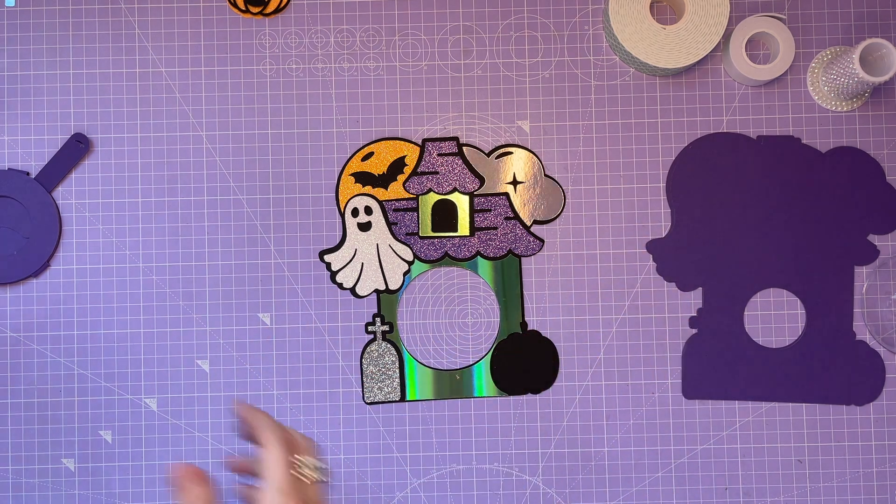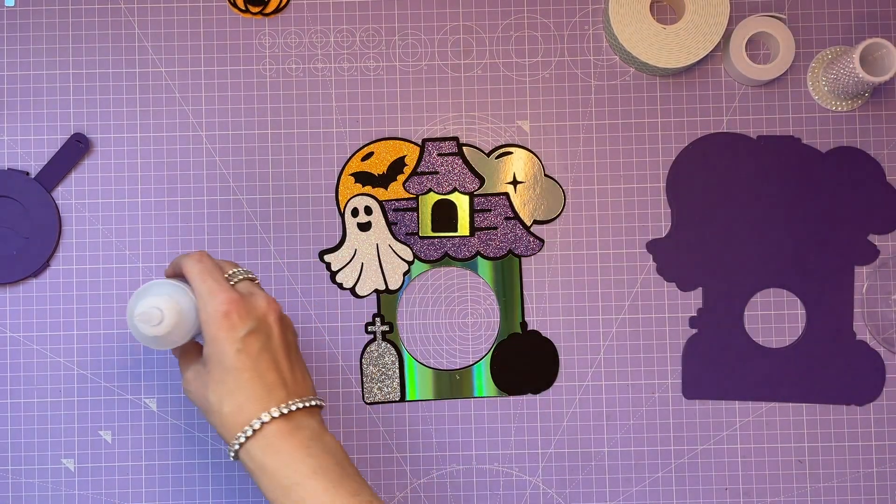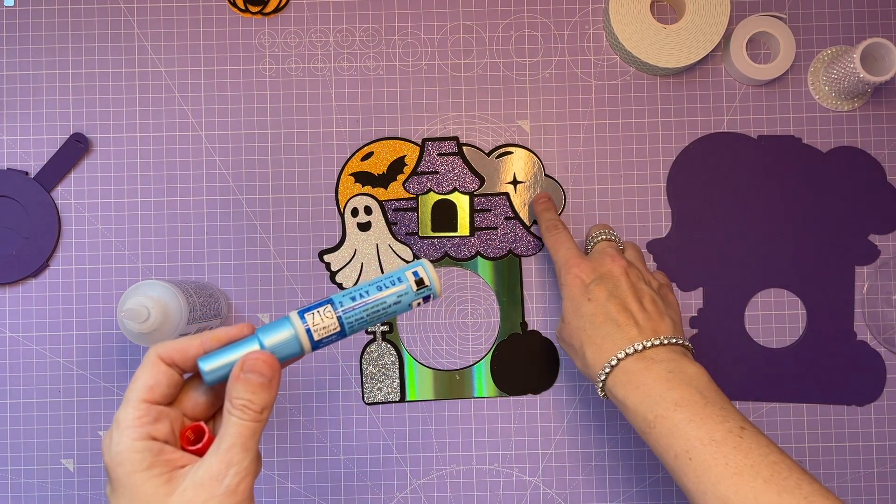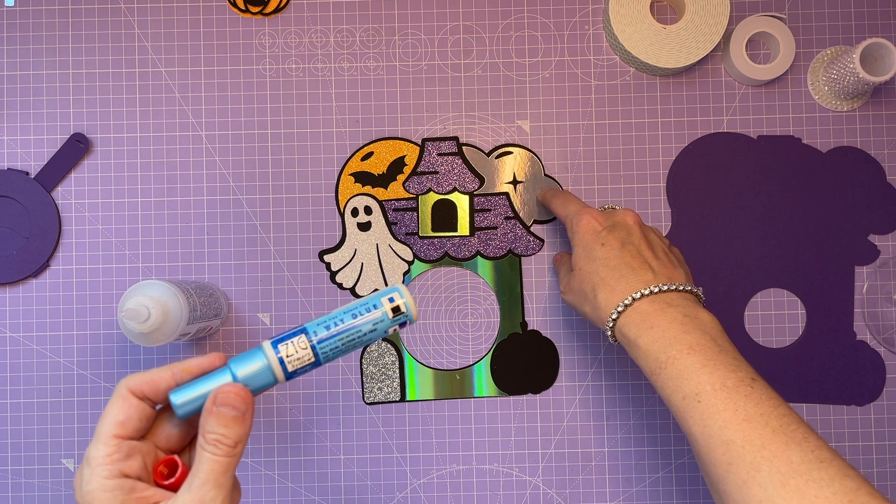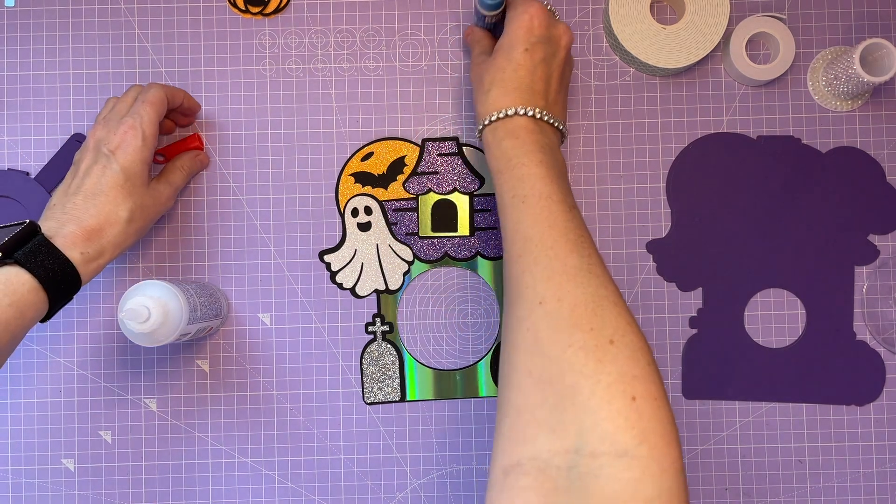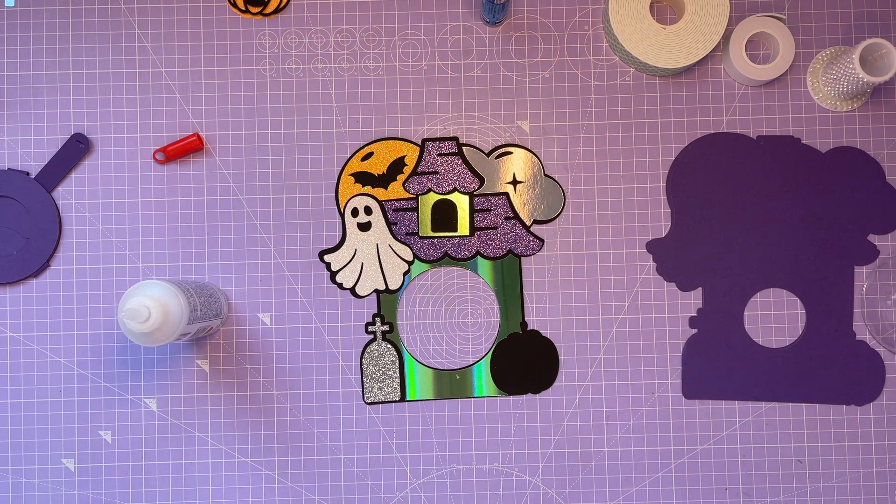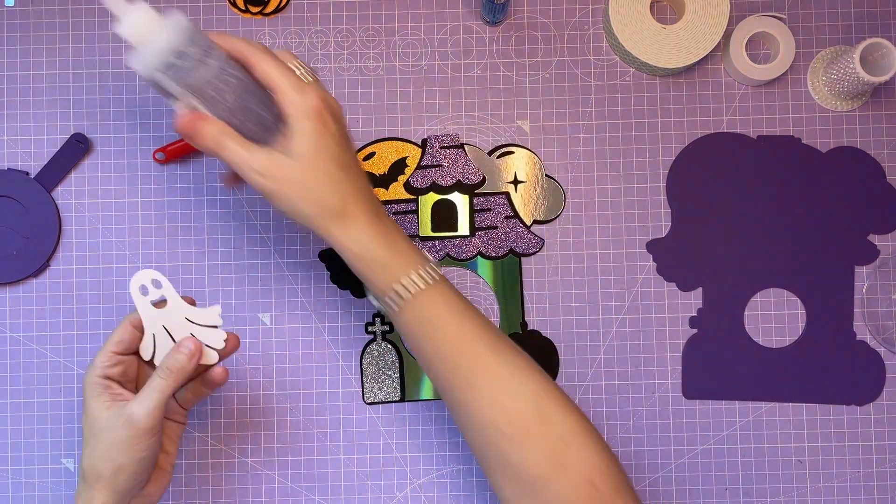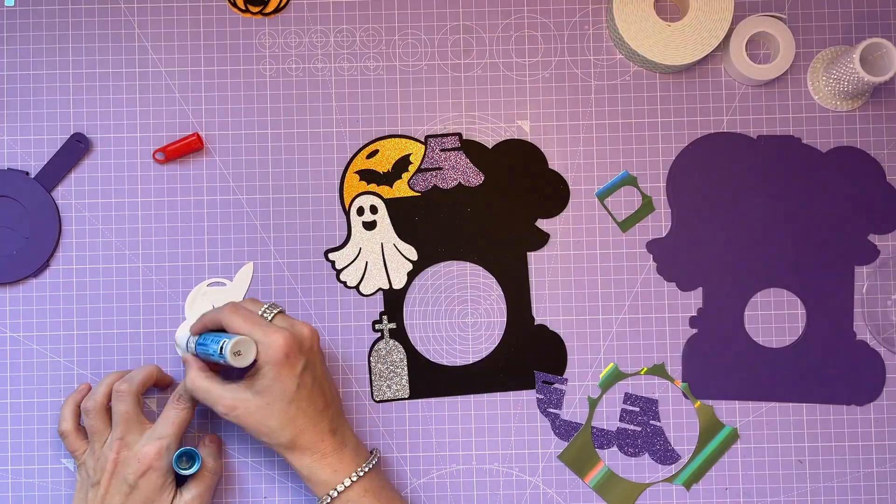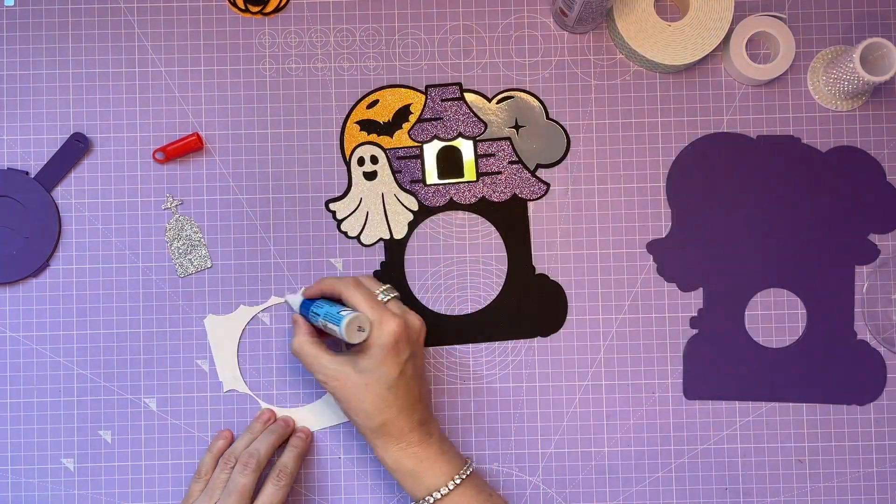I'm going to be using two different glues today. My Beacon 3-in-1, which is my favorite. I will use that on most of the glitter pieces. Then I'll be using this Zig two-way glue on things like the holographic or mirror card, because I find that sometimes the Beacon can stain that kind of card from behind. It's hard to explain until you use it. So I'm just going to go along and put all of the pieces down. As I said, Zig for the holographic and mirror, and Beacon for the glitter.